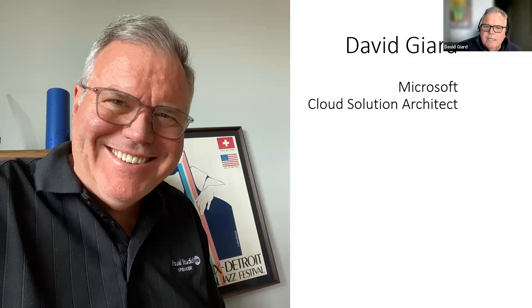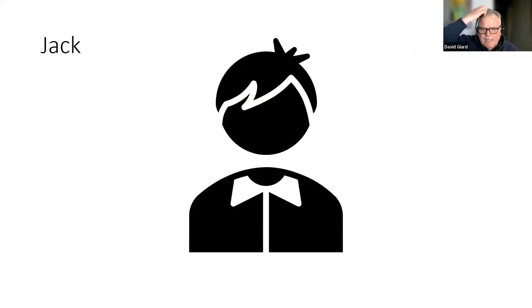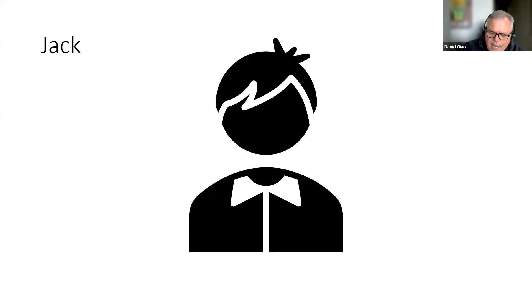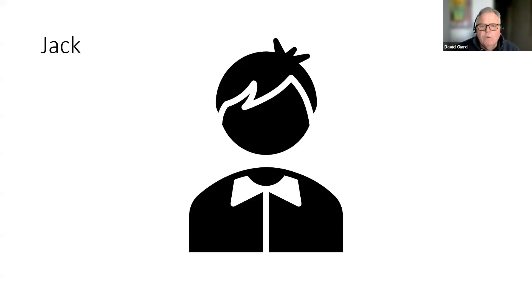We're going to start with the story of Jack. Jack is a software developer who spent days building a software component. He tested it, double-checked his code, made sure it met all the requirements, and checked it into source control. A few weeks later a new version was released to production, a user found a bug and tweeted about it. Jack fixed the edge case he hadn't considered — a couple of hours of work — and pushed it out to production.